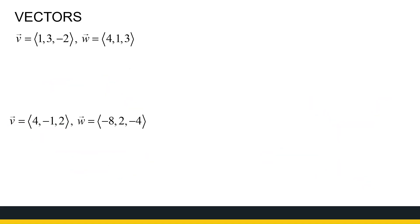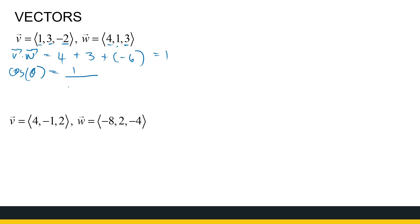Let's find the dot product of V and W and get the angle between them. The dot product is 1 times 4, so that's 4, plus 3 times 1, so it's 3, plus minus 2 times 3, so that's minus 6. So 4 plus 3 minus 6 gives me 1. Now to find the angle between them, cos theta is the dot product divided by the product of the magnitudes. The magnitude of V is the root of 1 squared plus 3 squared plus minus 2 squared, so that's root 14.